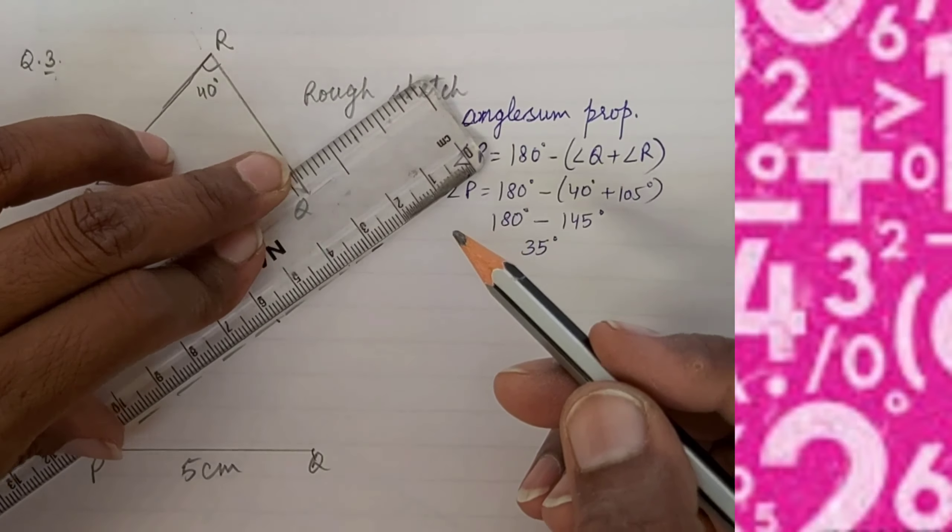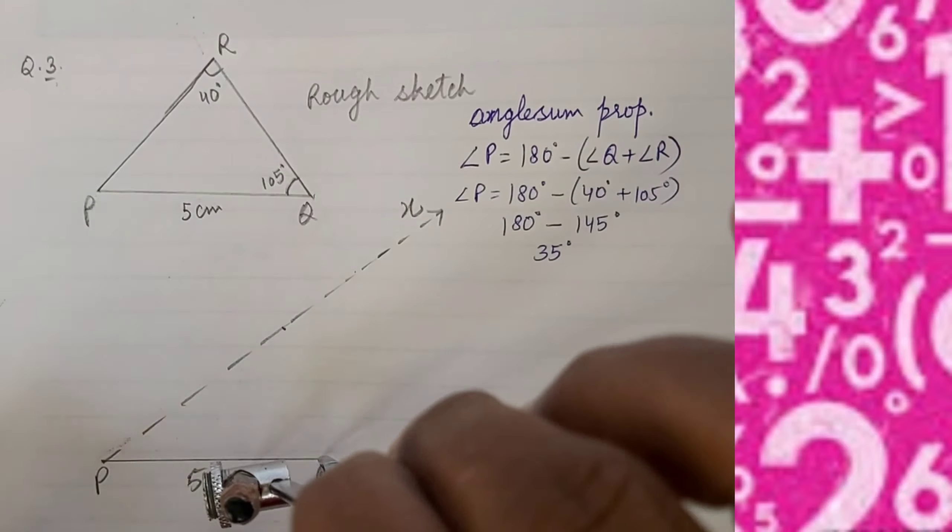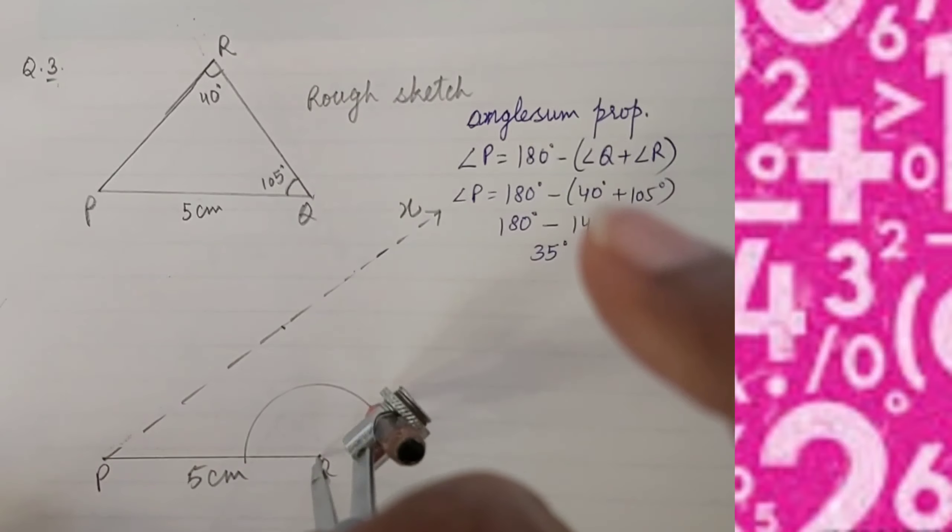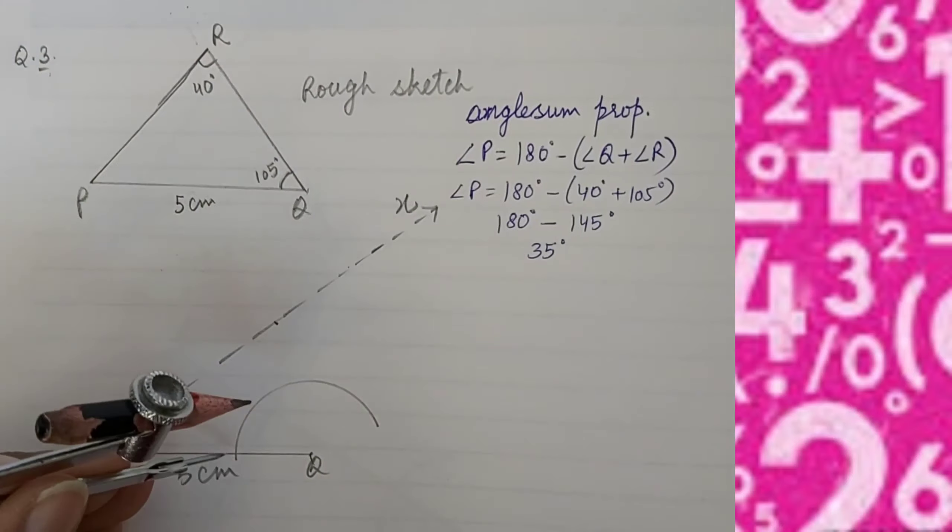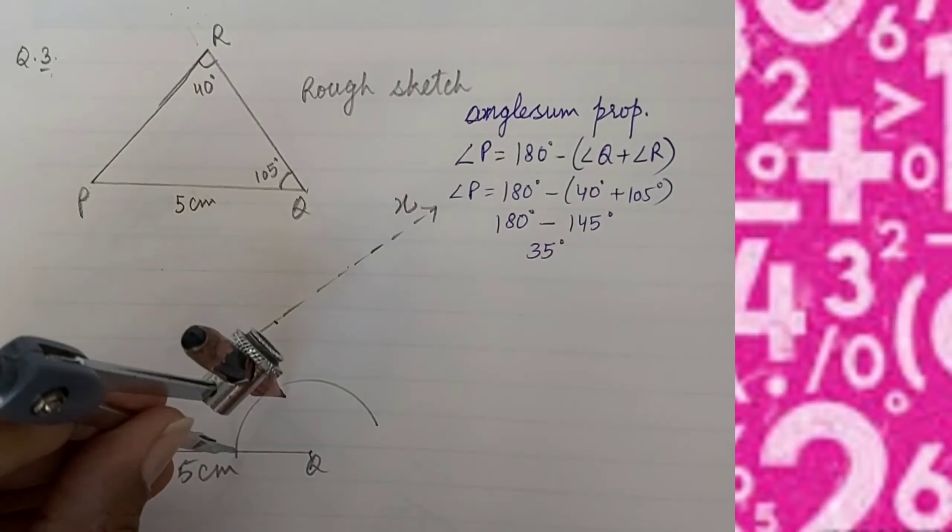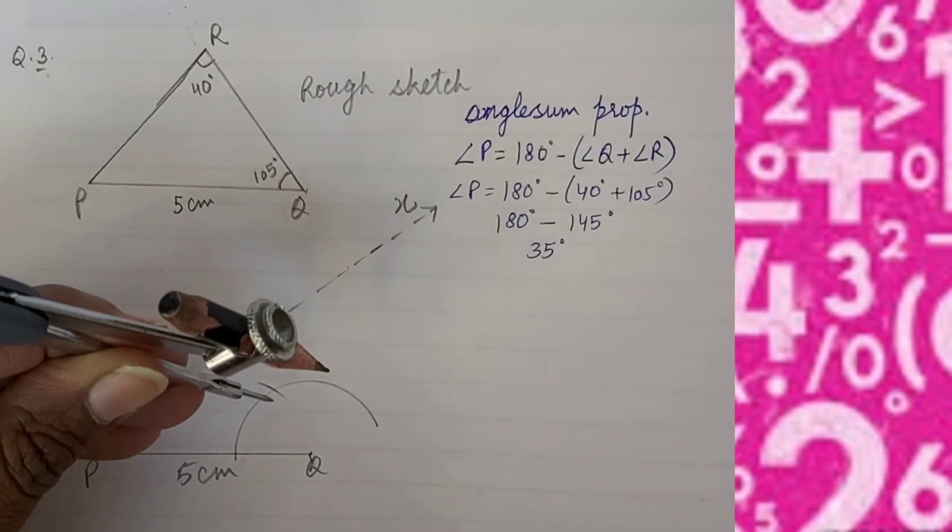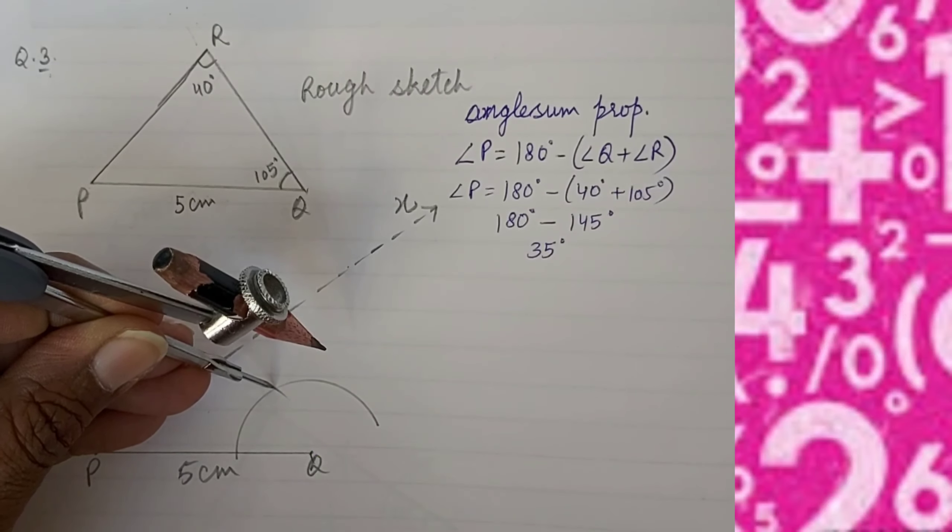Now for 105 degree angle Q, because 105 degrees is divisible by 15, we will construct using compass. So we will draw 60 degrees, then 120 degrees.